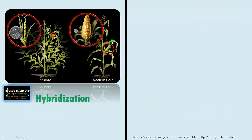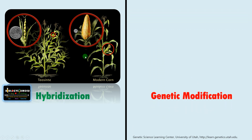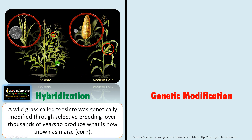Let's take an example to understand better. In hybridization, this is a modern corn, and it was developed from this wild grass teosinte through selective breeding over thousands of years. This is the kernel size of the wild grass. After selective breeding for thousands of years, we now have present-day corn with a large kernel. All crop varieties we have today are produced through selective breeding or hybridization.